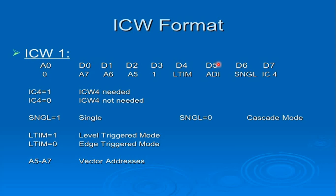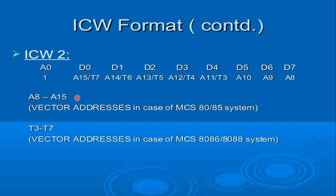D6 is the single bit: if bit value is 1, it is single mode; if 0, it is cascaded mode. D7 is IC4: if bit value is 1, ICW4 is needed; if 0, ICW4 is not needed. ICW2 specifies the high-order byte of the call instruction, with A0 constant at 1. D0 to D7 act as A8 to A15 of the interrupt vector address. ICW3 in master mode: D0 to D7 specify S0 to S7. If bit value is 1, the interrupt request register input has a slave; if 0, the interrupt request input does not have a slave.